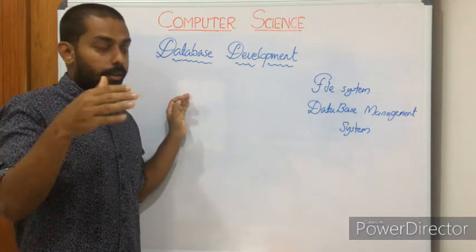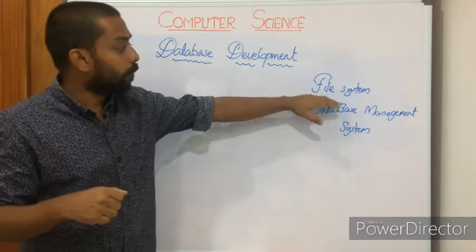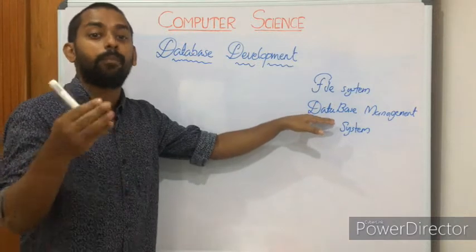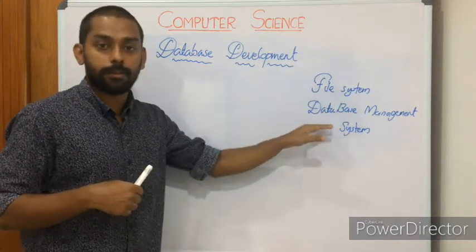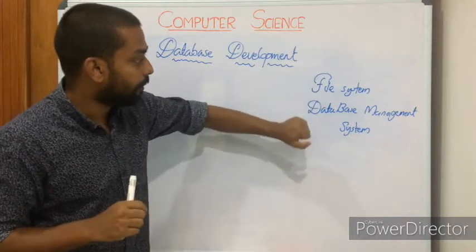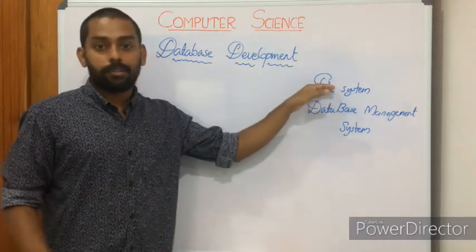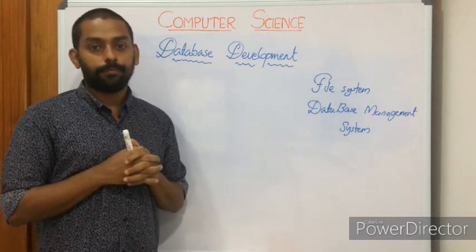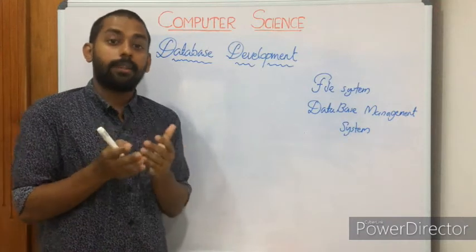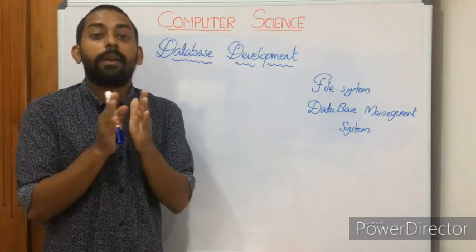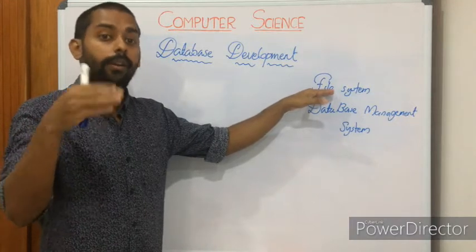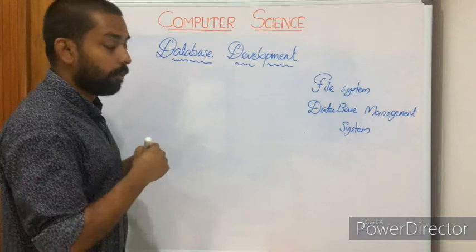Database — if you reverse the term, it's base of data. Base means a terminology used to store something, so database refers to the storage of data. Not only storing data, but we also perform manipulations on it. File system and database management systems are two ways of storing and manipulating data. Let's look at file system first — a system consisting of files. A file is a way to store data; it is one of the data storage mechanisms.